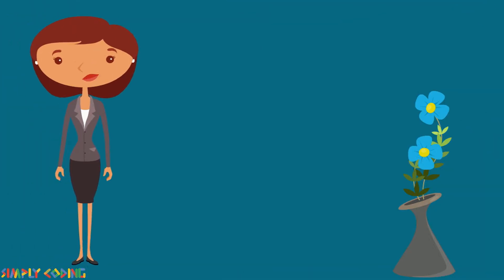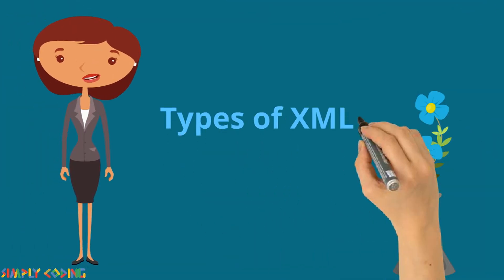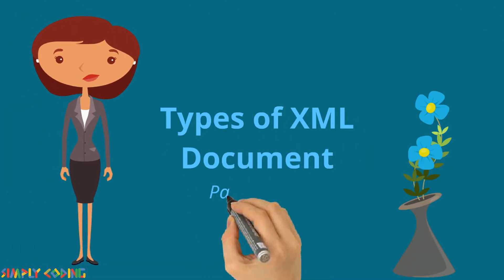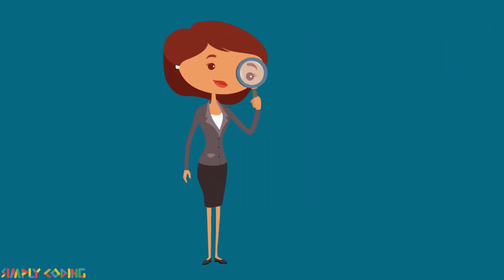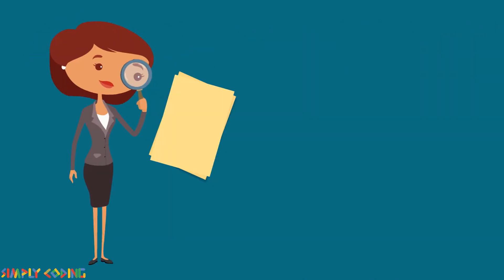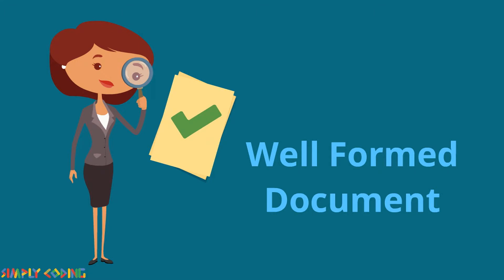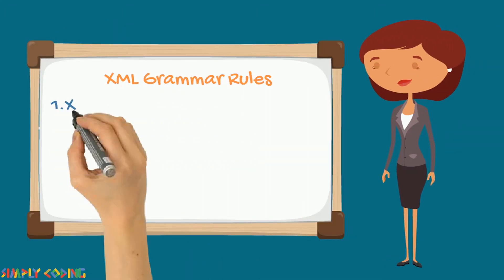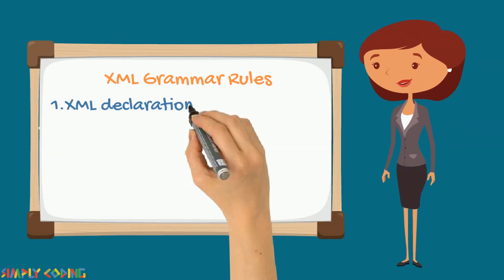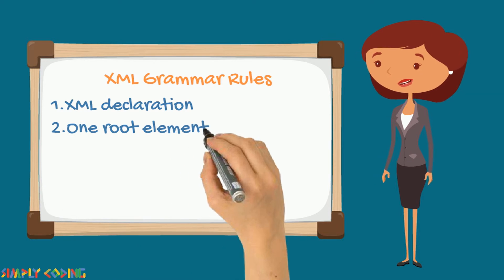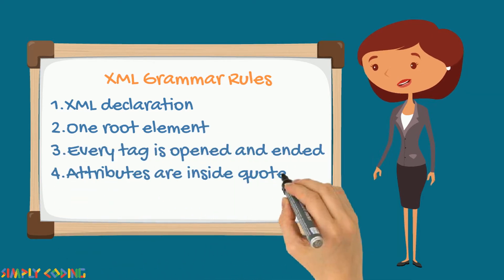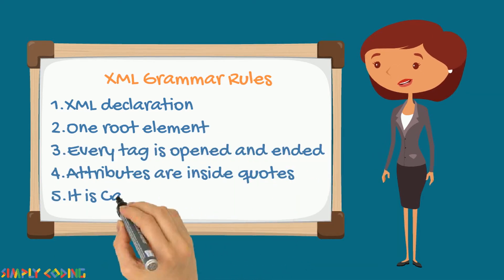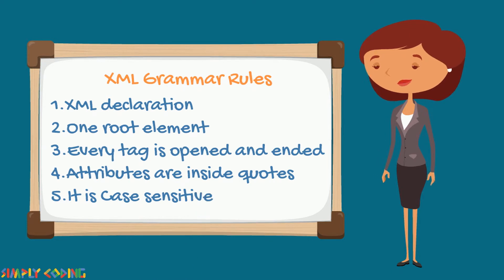In this video, we are going to cover what are the different types of XML documents. A document that obeys the XML grammar rules is a well-formed document. It should have an XML declaration, one root element, every tag is opened and ended, attributes are inside quotes, and it is case-sensitive.